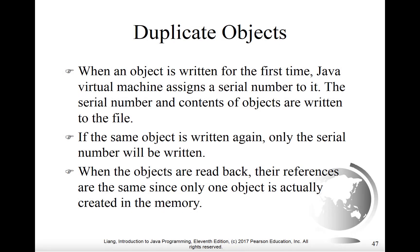If you write an object out to disk using the ObjectOutputStream and then write the same object out again, Java is smart enough to know there's no need to put two copies into the disk file. When an object is first written out, a serial number goes with it. If you attempt to write the same object a second time, only the serial number will be written, which can create huge savings. On the flip side, when reading objects back in using the ObjectInputStream, if you encounter a second copy of that object, only the serial number will be there. When that serial number is read in, an appropriate reference will be created back to the first object that was built, and you'll simply have another reference to that same object in memory.